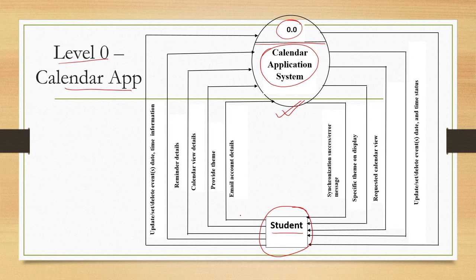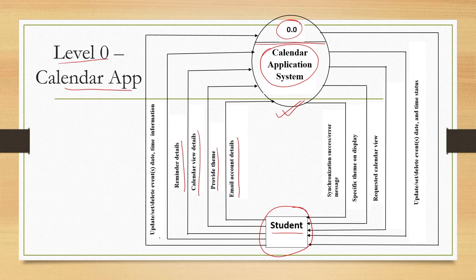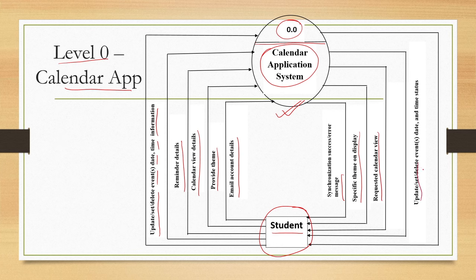In this case, it is a student who are the primary users of the app, and there is data flow between the entity and the process. Student can provide to the system data such as email account details, theme details, calendar view details, reminder details, update/set/delete events, date and time information. Similarly, the system can send to the student information such as synchronization success or error messages, specific theme on display, requested calendar view, and update/set/delete events date and time status.